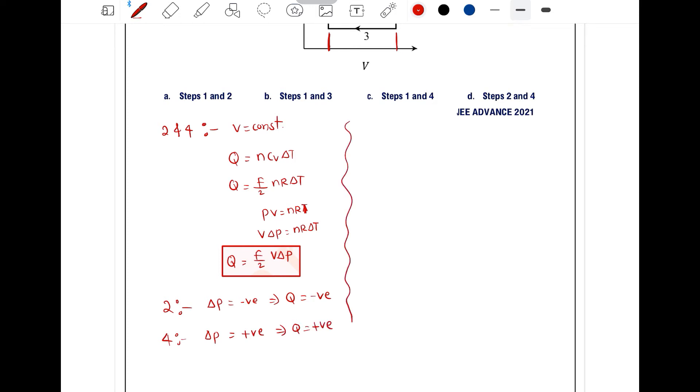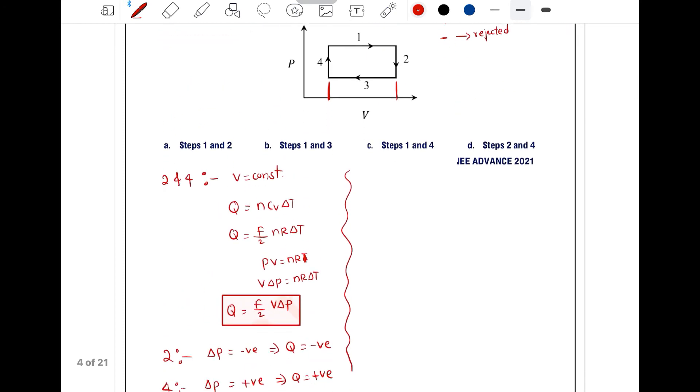Now we will discuss processes 1 and 3. In processes 1 and 3, pressure is constant. As pressure is constant, for isobaric process, Q can be written as NCP∆T. So Q equals N times CP which is F plus 2 by 2 into R∆T, giving us Q equals F plus 2 divided by 2 into NR∆T.